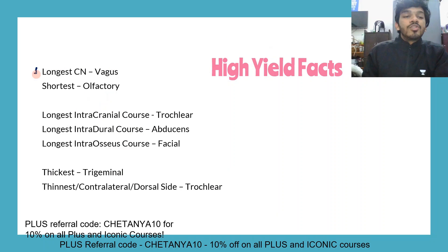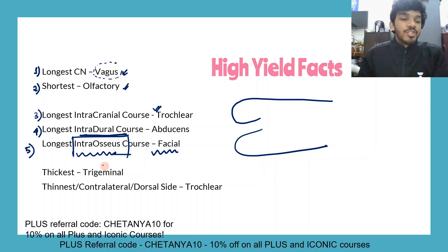Some high-yield facts to know: the longest cranial nerve is the vagus, and the shortest cranial nerve is the olfactory. The olfactory is short because it just passes through the cribriform plate to the olfactory bulb. The vagus is the longest because it goes all the way to the abdomen. The longest intracranial course is the trochlear nerve, because it first passes dorsally then anteriorly to the orbit. The abducens nerve passes through Dorello's canal, giving it the longest intradural course. The facial nerve passes through the internal auditory meatus and has its own bony facial canal, giving it the longest intraosseous course. The thickest nerve is the trigeminal and the thinnest is the trochlear. The trochlear nerve is also the only cranial nerve coming from the dorsal side, and the only one that decussates within the brainstem.